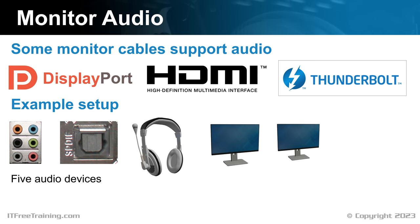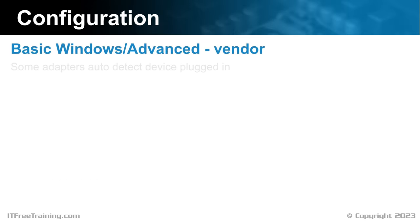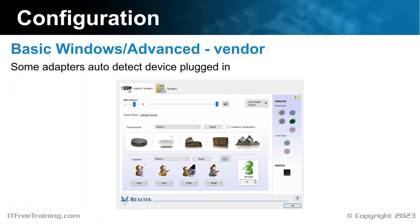I will now have a look at how to configure an adapter that is plugged in. Windows provides some basic configuration, available through the control panel or by selecting the speaker icon in the system tray. In some cases, the vendor may provide additional software for more advanced configuration. For example, Realtek often provides additional software to configure their sound adapters. This will be installed with the device driver, so if it is not present by default, it is recommended to download and install the device driver for the adapter. You will generally find an icon in the system tray, or you can access it through the control panel or the start menu.